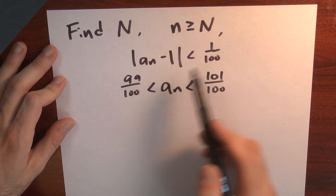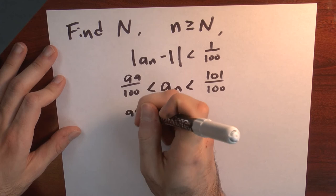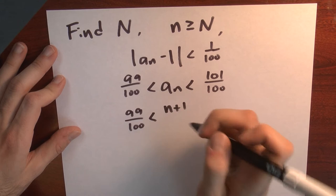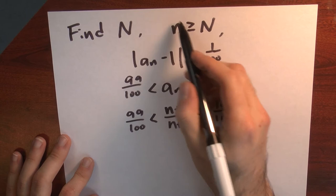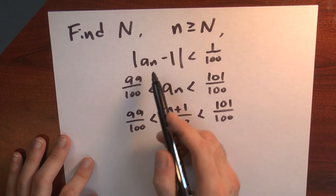Now I've got a formula for a sub n. So I could instead write this is 99 over 100, and the formula for a sub n is (n+1) over (n+2), is less than 101 hundredths. So what I'm trying to do is figure out how big I need big N to be, so that whenever little n is bigger than big N, I know that both of these inequalities hold, meaning that my nth term is really within a hundredth of 1.